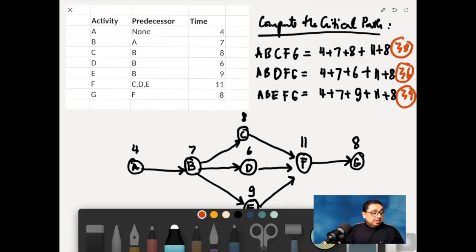Let me see. Let's double check. Let's use a calculator. So that's 4 plus 7, plus 8, plus 11, plus 8. 38. That's correct. And then 4 plus 7, plus 6, plus 11, plus 8. 36. That's correct.